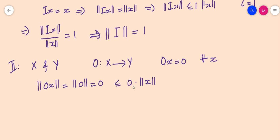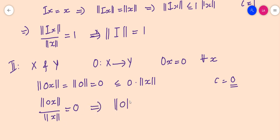So norm(0(x)) ≤ 0 · norm(x), where c = 0. Also, norm(0(x)) / norm(x) = 0 for every x ≠ 0, so its supremum is always 0, which implies the norm of the zero operator is 0. Therefore both the zero operator and the identity operator are always bounded linear operators.